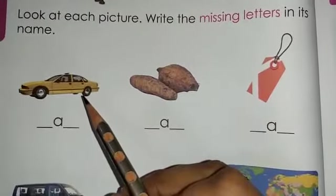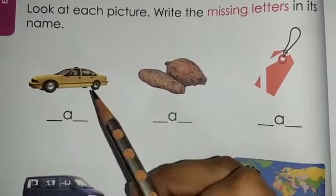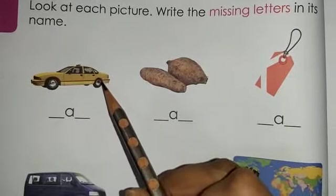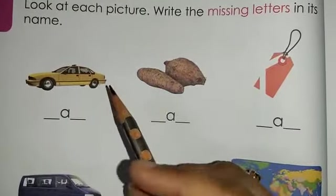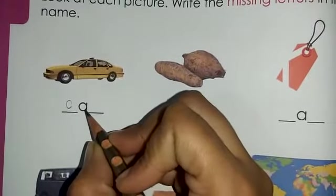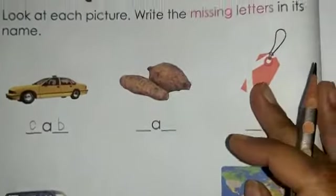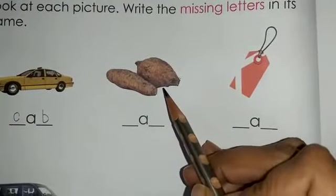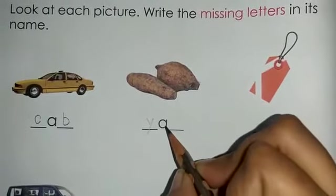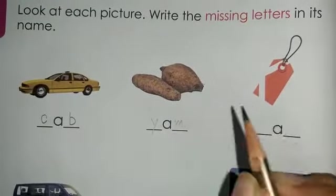So first of all, let's come up to the first picture. What do you see over here? What is this? Yes, this is a cab. C-A-B, cab. So we will write down C-A-B, cab. The word is cab. Now let's come up to the next one. What is this, students? Yes, this is yam. Y-A-M, yam.